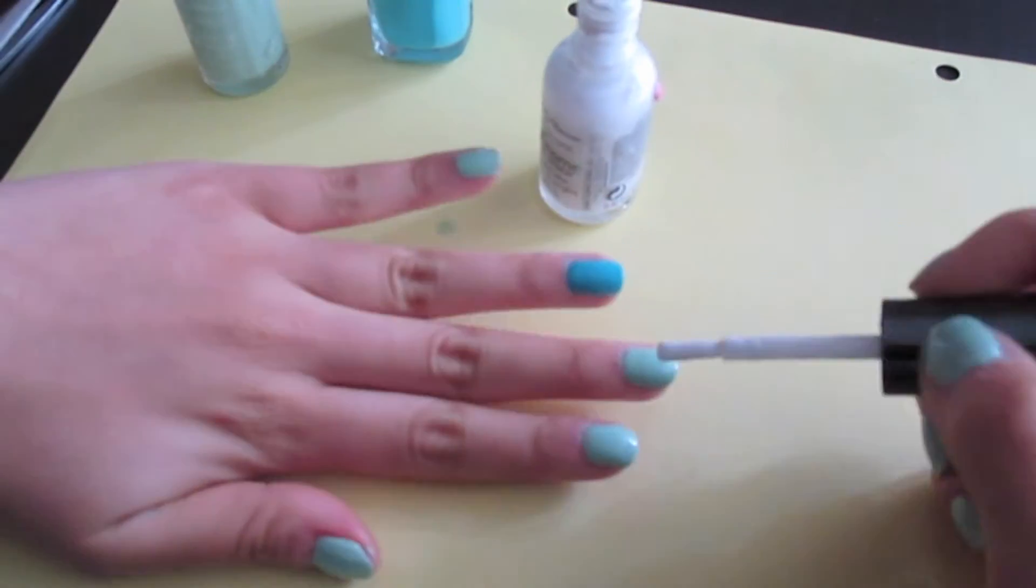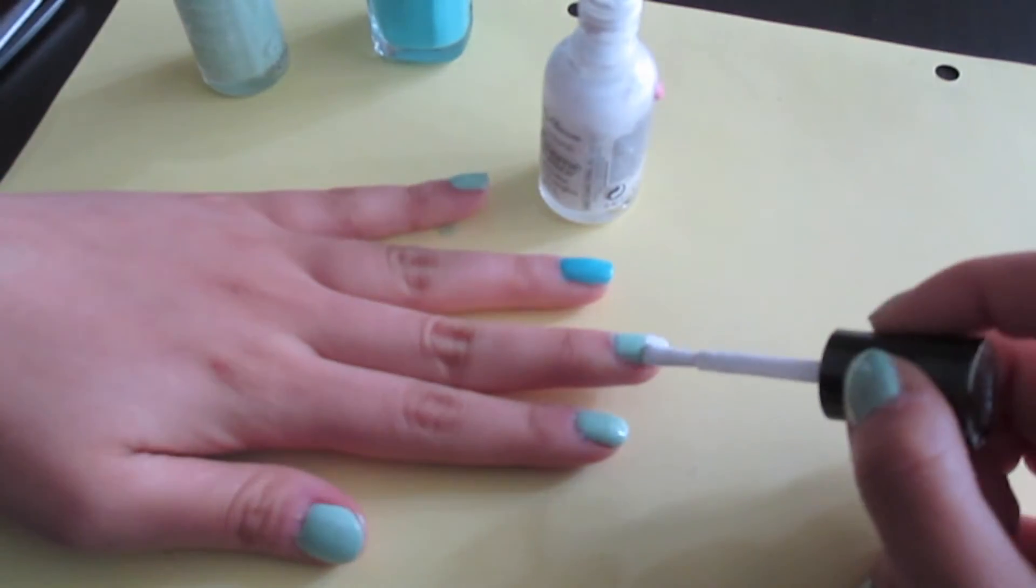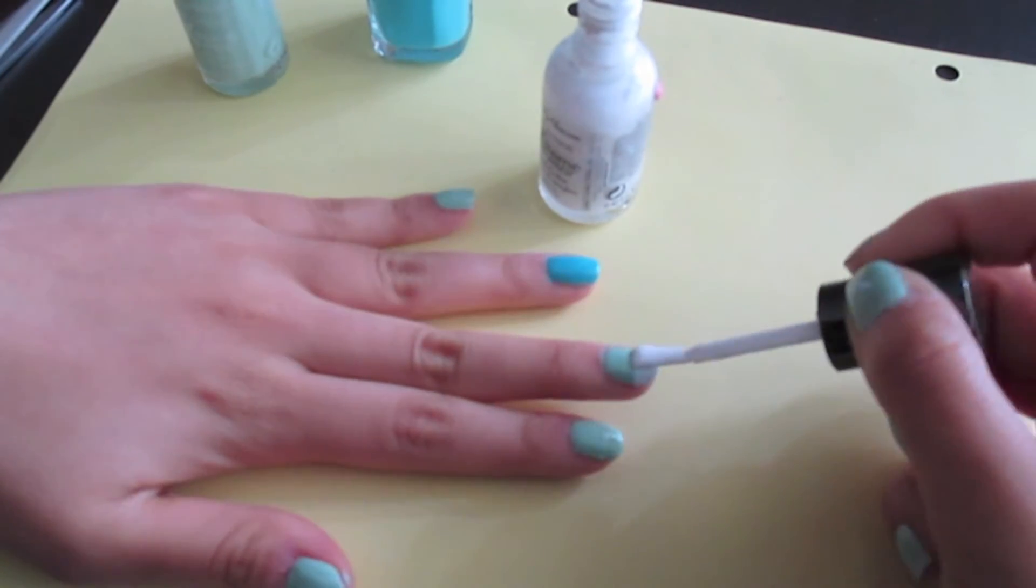Once they're dry, apply white nail polish to the top half of the nails, for all of them except for the fourth finger.